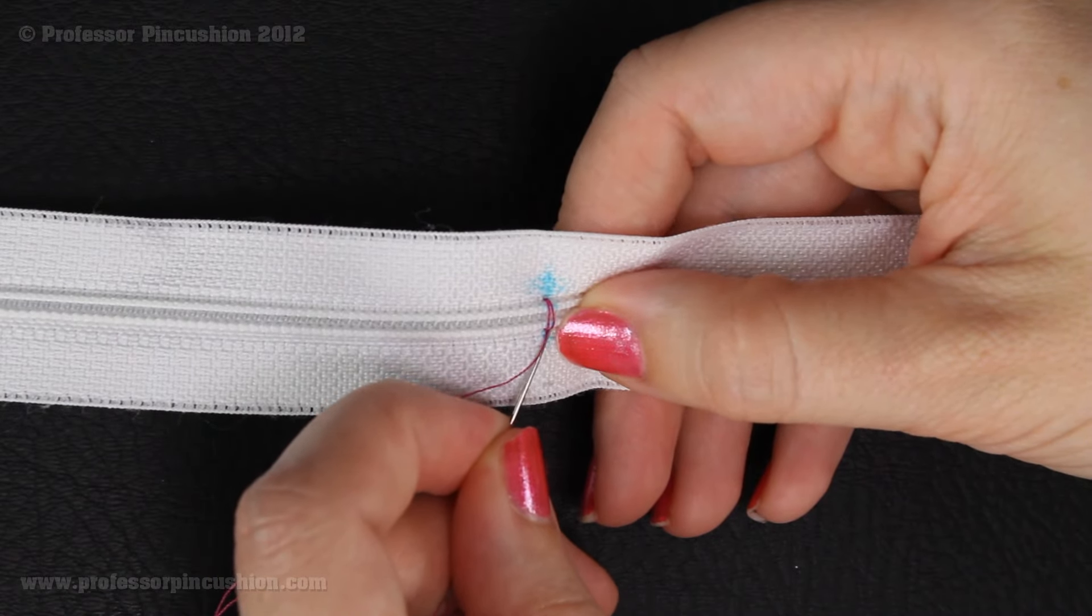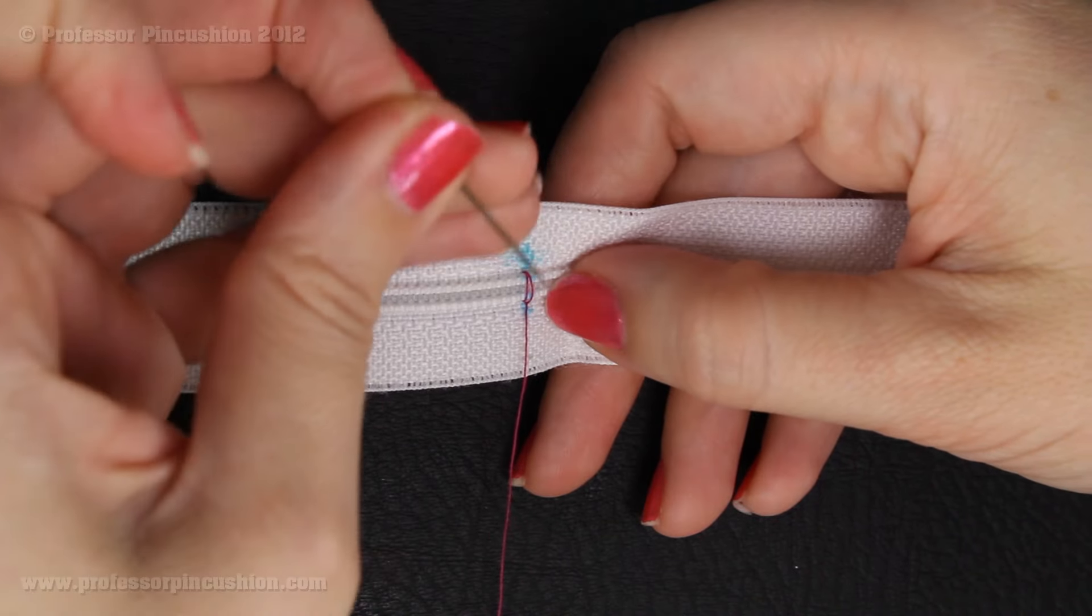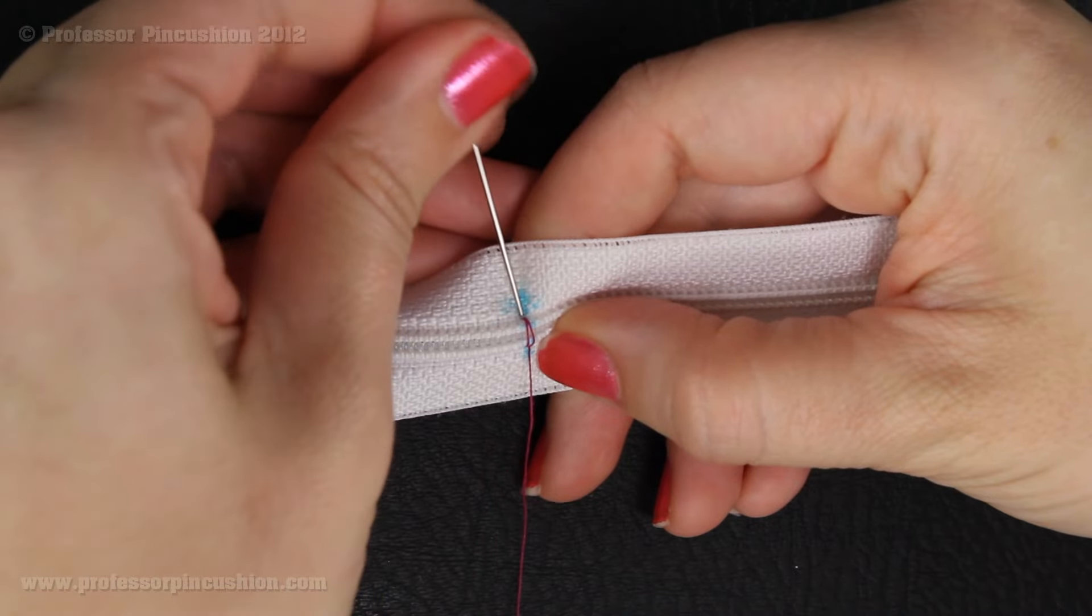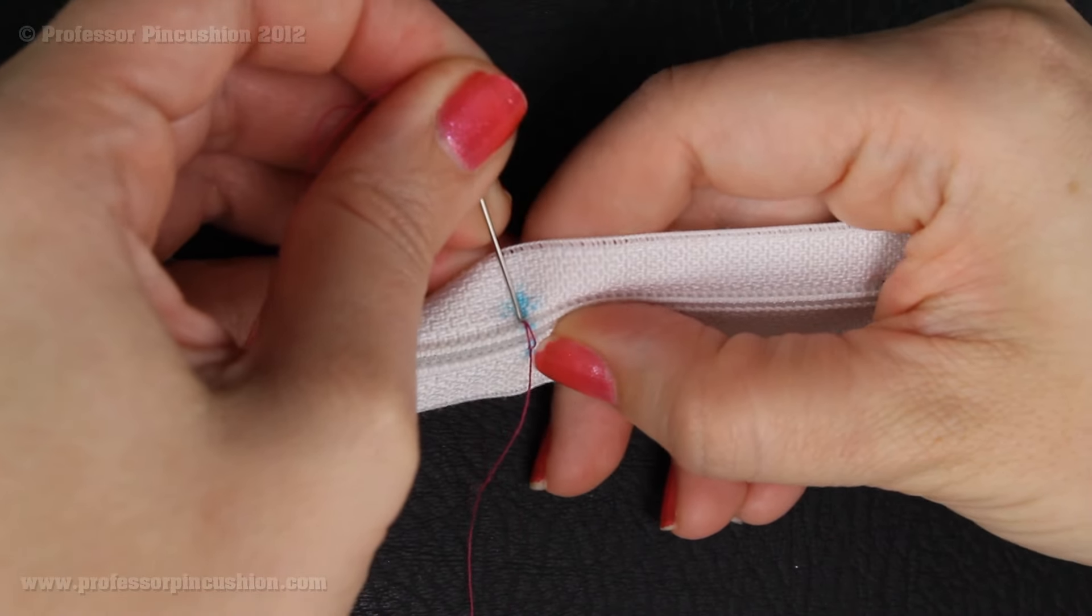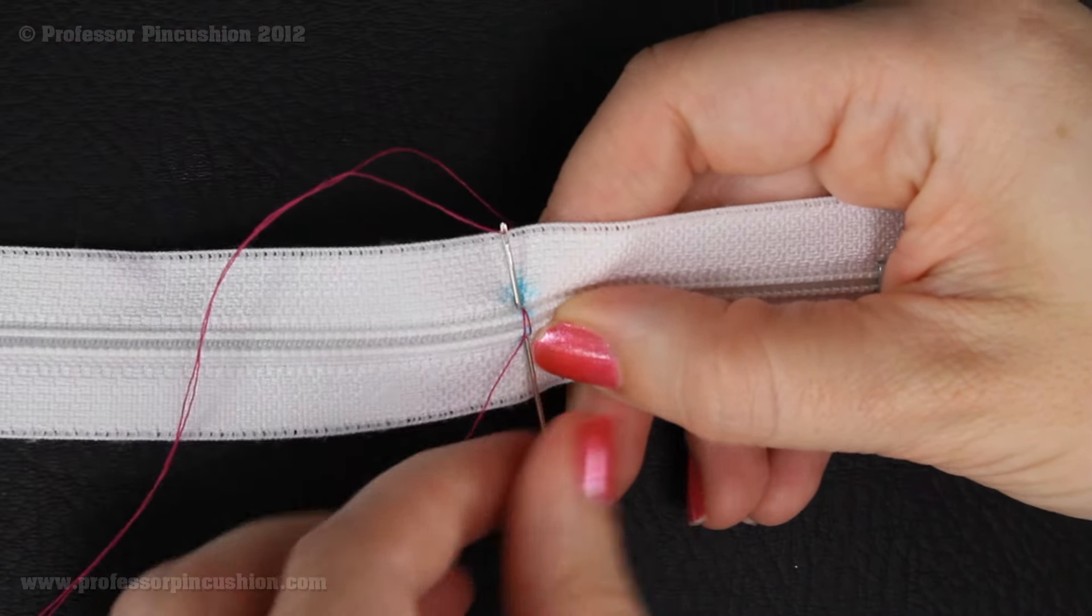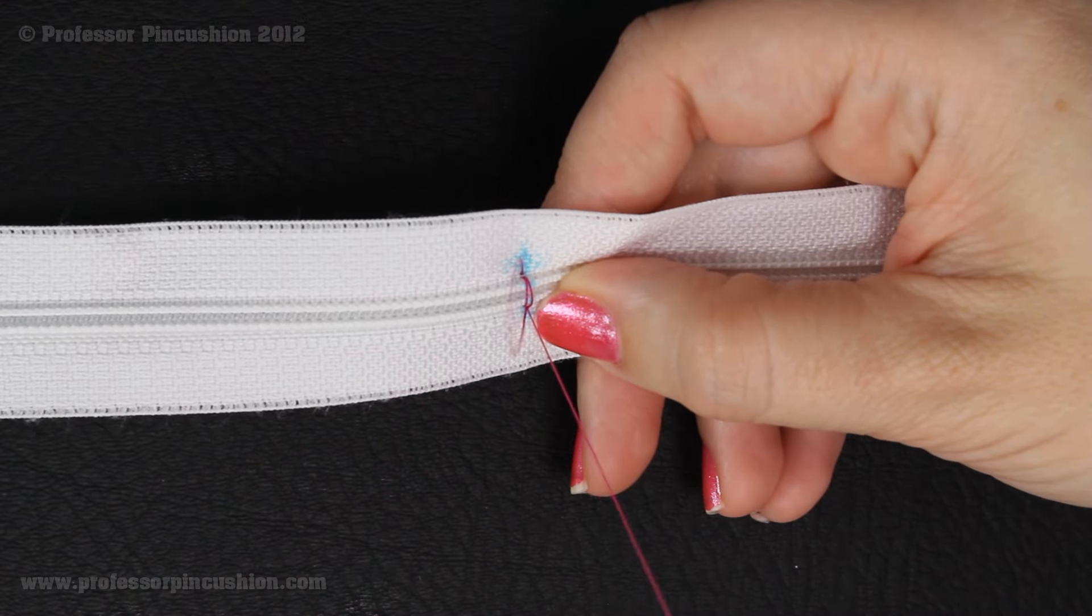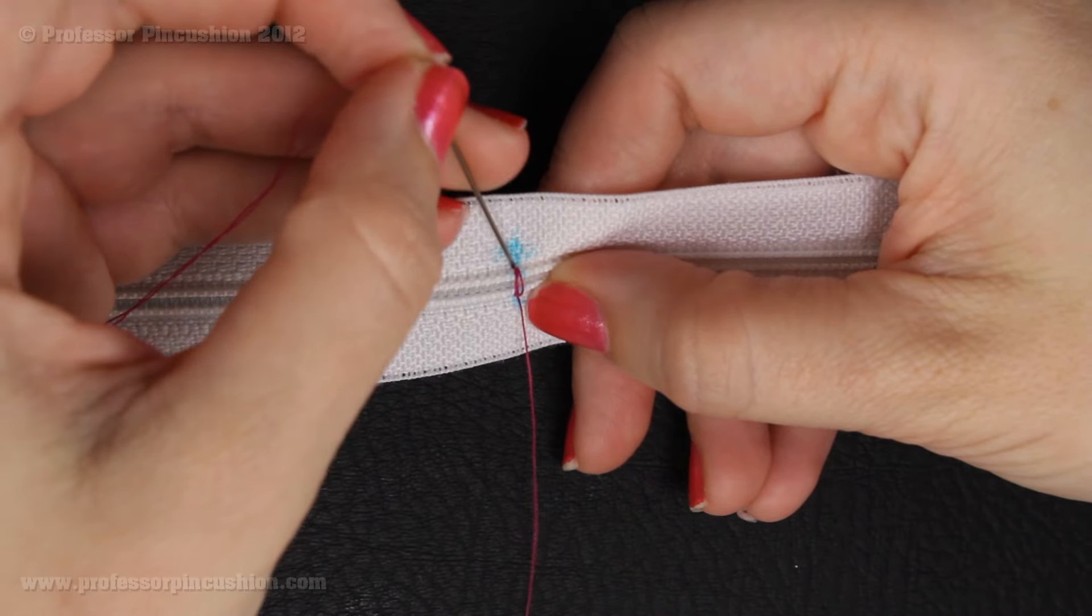So you can just move that over like that, and that's two. You're going to want to do this about 10 times so we can make sure that it's secured. Then once you've done about 10 stitches just in this manner, what you're going to want to do is turn the zipper tape over onto the back side and tie a knot, so then the knot will be hidden again on the wrong side of the zipper tape.